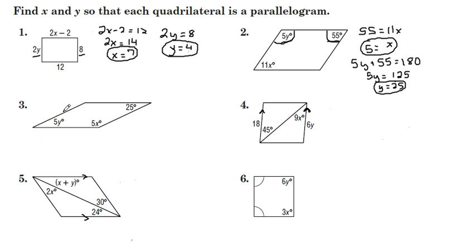Okay, number 3, kind of the same situation. Opposite angles congruent. Take 5y, set it equal to 25. y equals 5, by dividing both sides by 5 there.